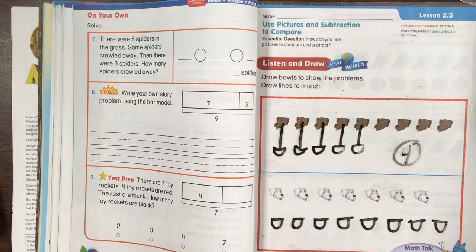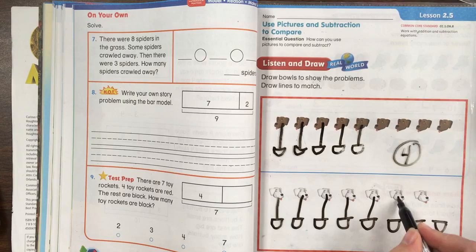There are seven white dogs. There are eight bowls. How many more bowls are not needed? How many are not needed? So let's draw a line to connect each dog to a bowl.